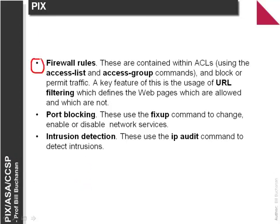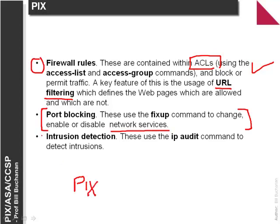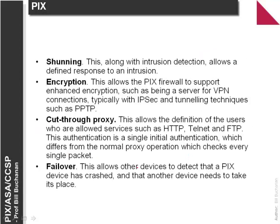Basically the PIX is a multi-functional device. It has basic firewall rules in which we can set up ACLs, and we can also filter at a high level such as with URL filtering. We can also block ports and enable network services. A key advantage is that the PIX firewall actually understands how certain protocols work and can open up ports automatically. It does intrusion detection systems, especially with the IP audit command, to be able to detect more advanced intrusions than many firewalls can. It does shunning where we can shun an intrusion along with detecting it.